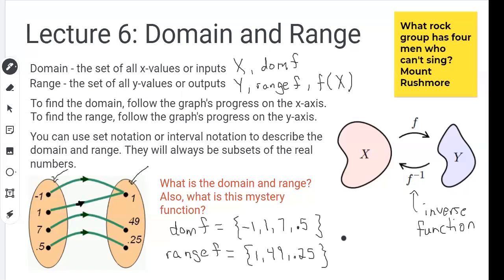So that's the domain and range. What is this mystery function? If you think you know, go ahead and type it in the chat box. It's going to be one of the parent functions from the first lecture — one of those ten. Notice that it's mapping negative one to positive one, positive one to positive one, seven to 49, and 0.5 to 0.25. What do you think this function is?